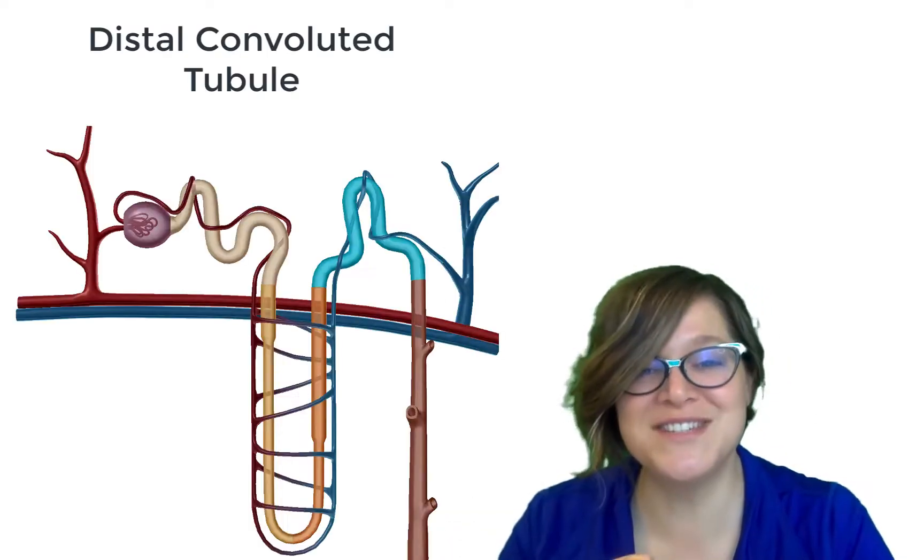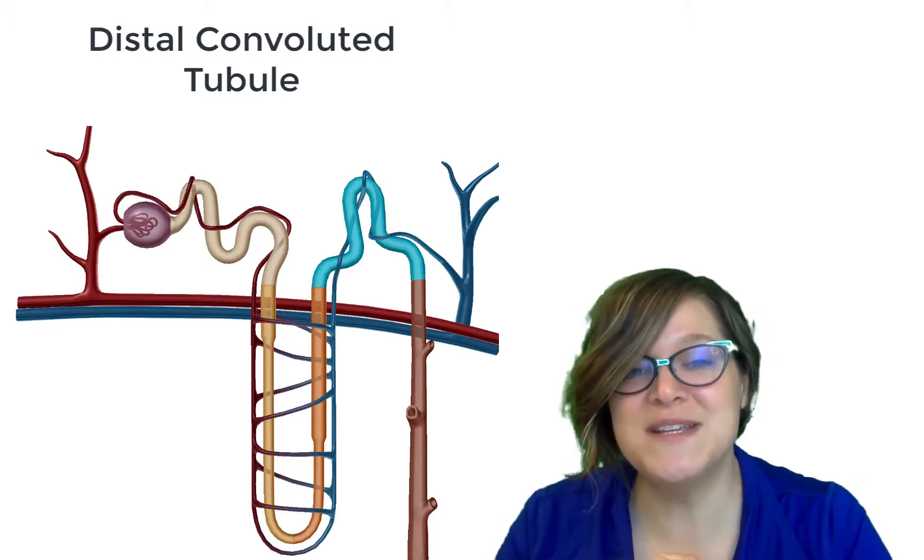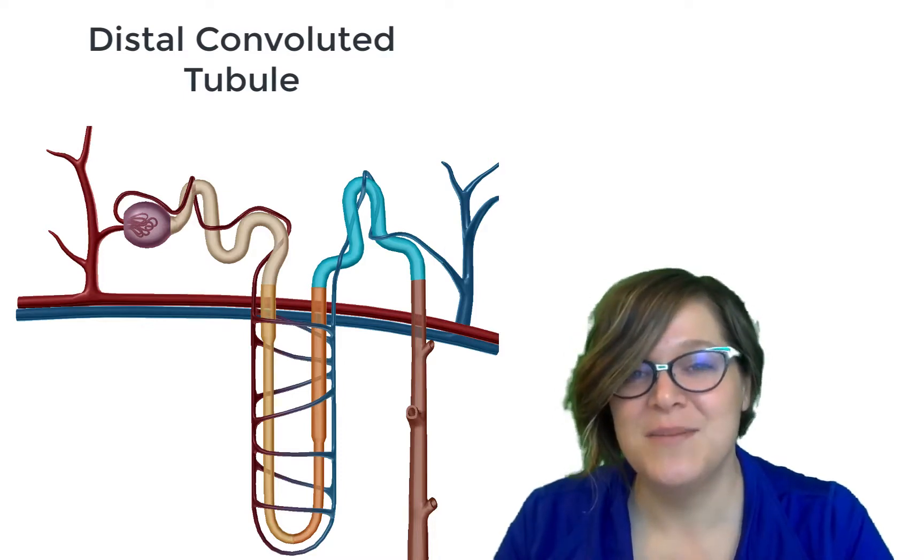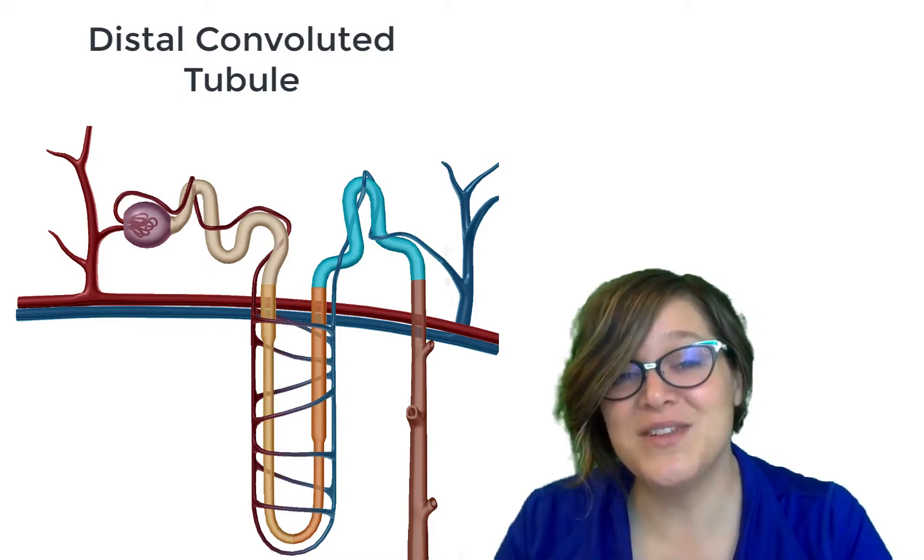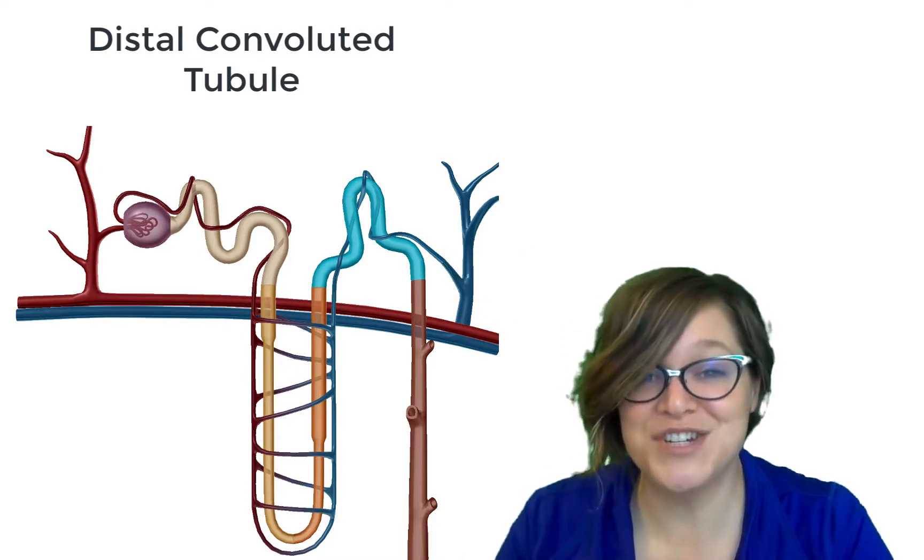From there, we go through the distal convoluted tubule. That just means distant twisty tube. And this is where there's going to be some fine-tuning of the urine concentration. Basically, as we go through this distal convoluted tubule, there's a little bit of absorption going on and a little bit of secretion.